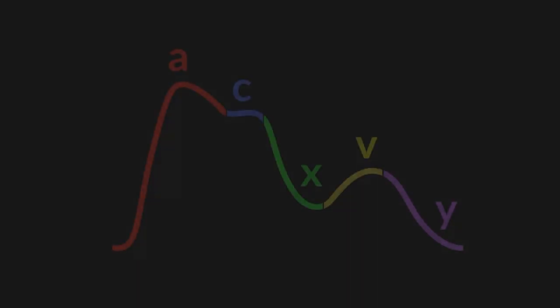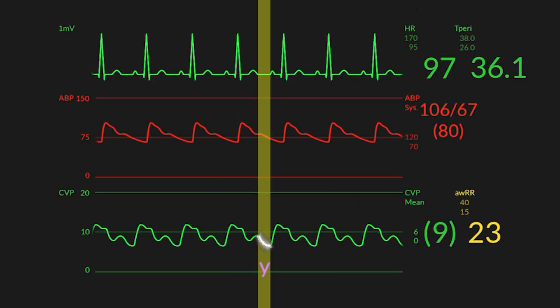Okay, so now the next part of the CVP trace is what's known as the Y descent, and that's this long segment here. And what that represents, that's an early diastolic event. So here's the Y descent, and we're starting to be under the diastolic portion of the A-line trace. We're under the diastolic portion of the EKG.